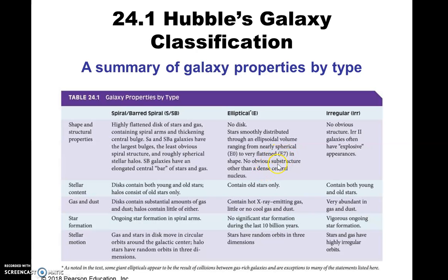This classification was kind of subjective according to when Hubble first looked at these things. Other people came after him and basically used his classification scheme. It was very useful in the beginning when we started studying galaxies. Now we know a lot more about galaxies, and so the scheme is still used, but whether something's an E seven or an E six doesn't really matter that much anymore.